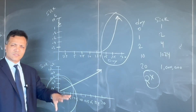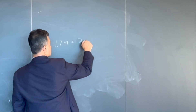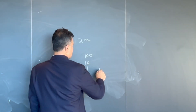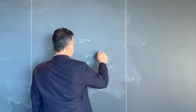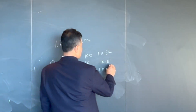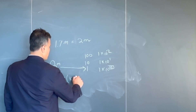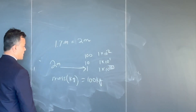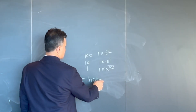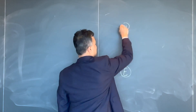Real-world examples: the order of magnitude of my height — I'm about 1.7 meters, roughly 2 meters. Since 1 meter is 10 raised to 0 and 10 meters is 10 raised to 1, 2 meters is closer to 1 meter, so the order of magnitude is 0. My mass is about 100 kilograms, which is exactly 10 raised to 2, so the order of magnitude is 2.